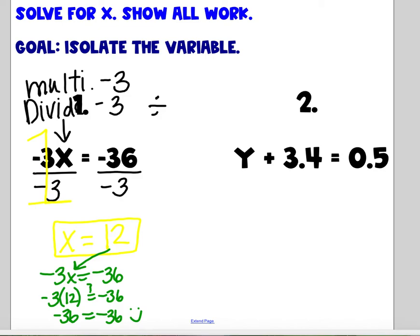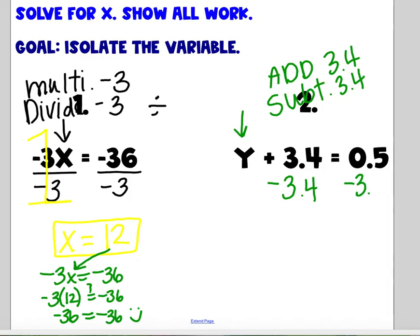Number 2. I have y plus 3 and 4 tenths equals 5 tenths. You want to use the proper math vocabulary, the place values. So I'm adding 3 and 4 tenths to my variable. The inverse would be to subtract 3 and 4 tenths. I'm going to subtract 3 and 4 tenths here and on the other side of the equation. Sometimes I suggest putting a dash down your equal sign just to keep your left and right sides clean and organized.